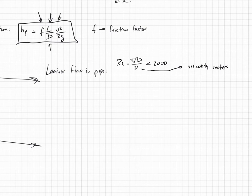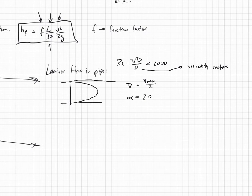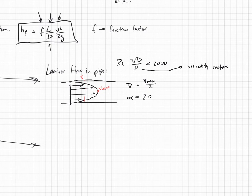Once the Reynolds number gets too big, the viscosity is small relative to everything else. In the laminar case, V-bar is approximately equal to V-max divided by 2, which tells us that alpha is about 2.0. This is the flow in a pipe — the V-bar is approximately halfway up, so if this is V-bar and this is V-max. Someone did experiments and discovered that in the laminar flow case, F equals 64 divided by the Reynolds number. That's a nice easy result.